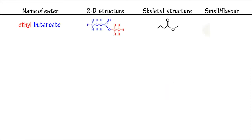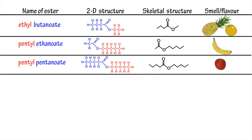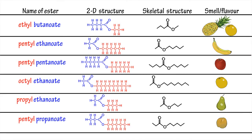Ethylbutanoate is an odiferous compound with a pineapple or orange smell and flavour, which is used in the food industry. It is one of a range of esters with relatively low molecular masses that are volatile compounds with distinctive fruity smells. For example,